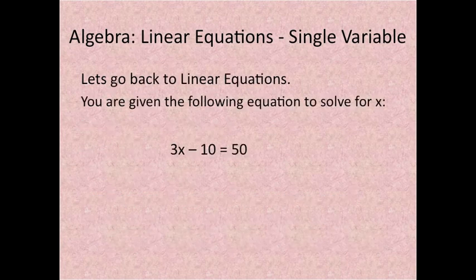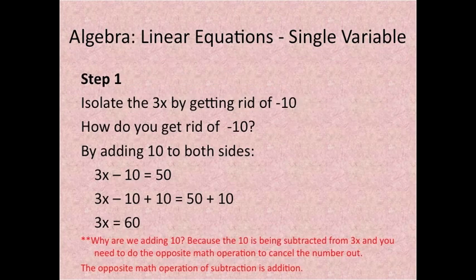Let's go back to linear equations. You are given the following equation to solve for x: 3x minus 10 equals 50. Step 1: Isolate the 3x by getting rid of minus 10. How do you get rid of minus 10? By adding 10 to both sides.